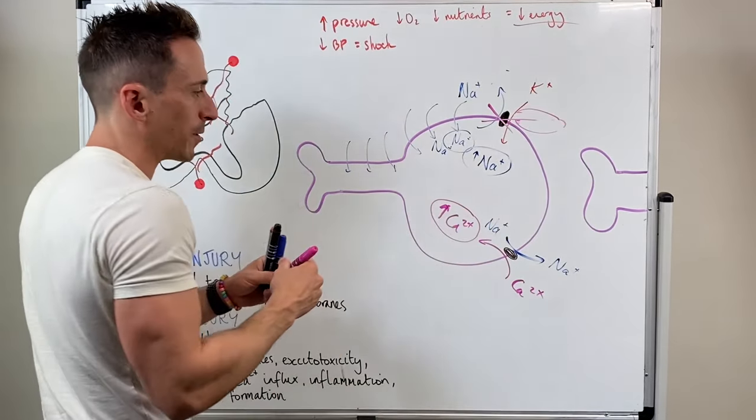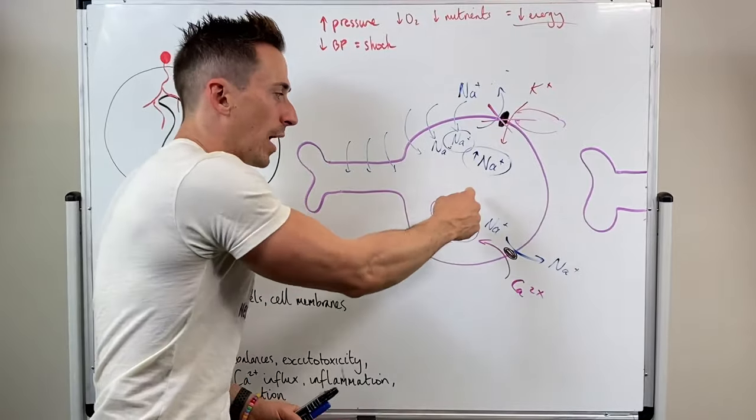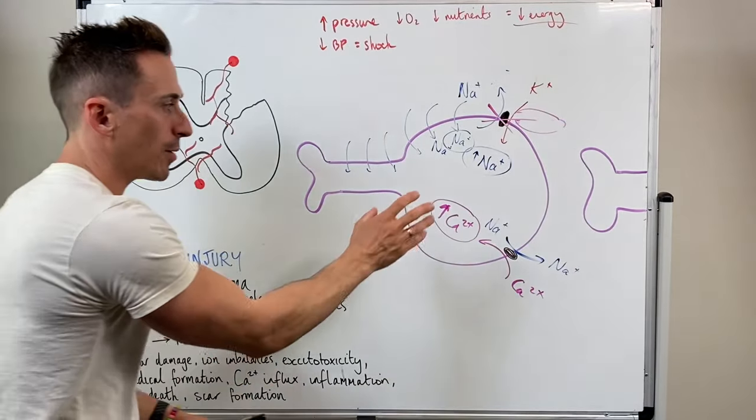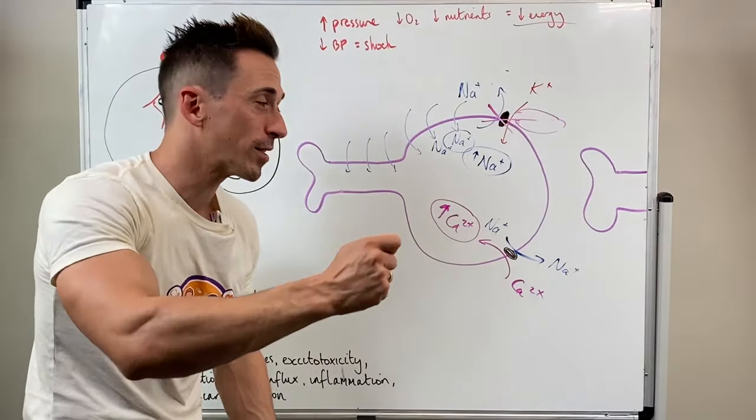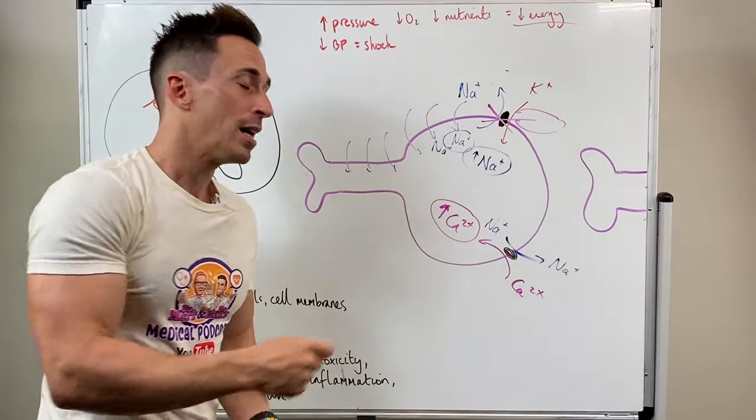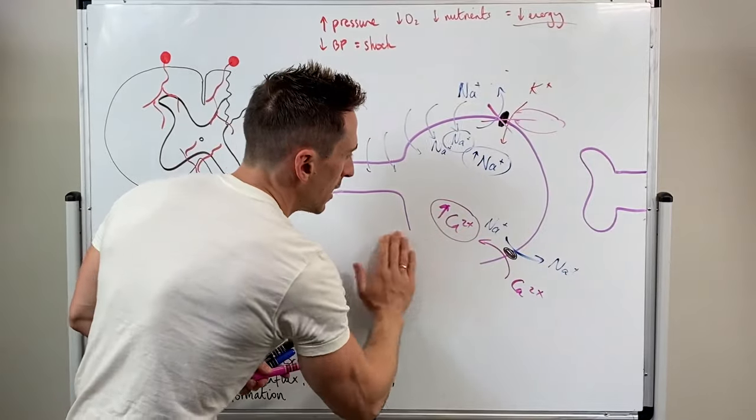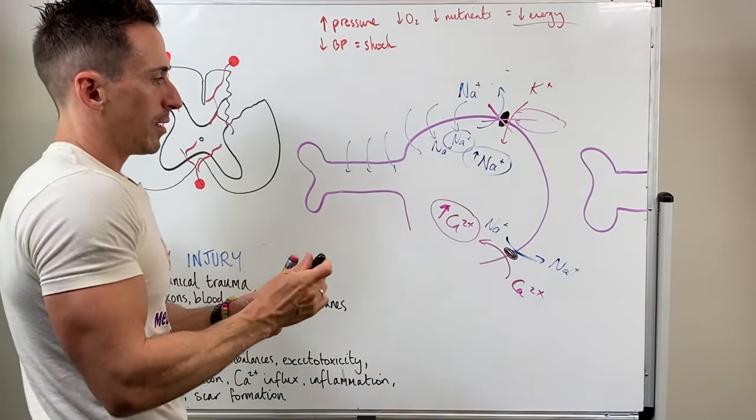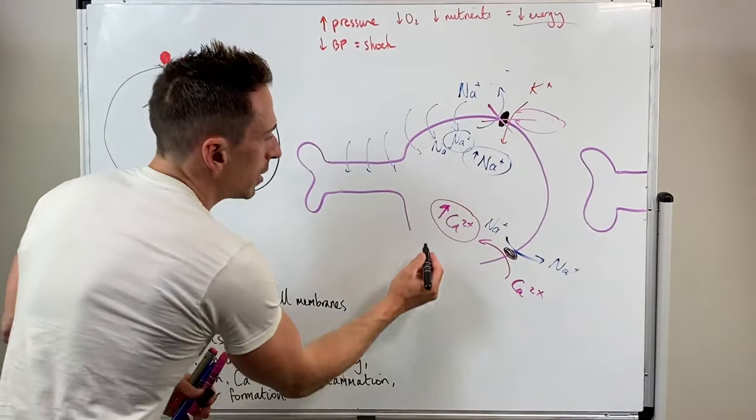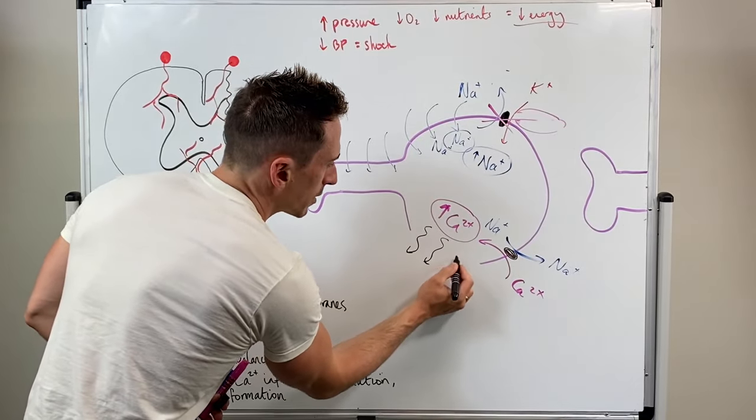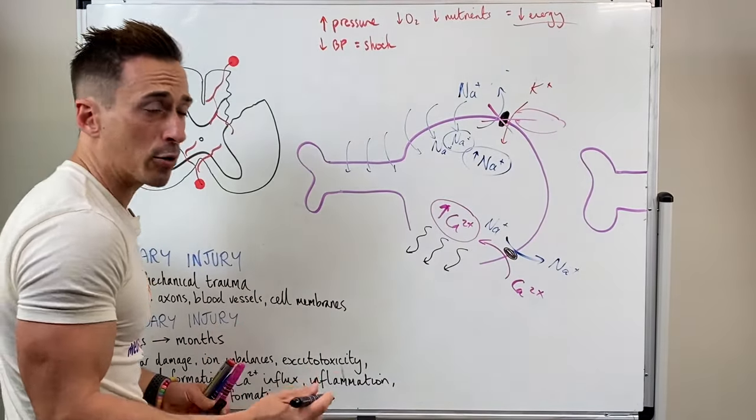Here's an important point: calcium influx, which you can see I've written here, calcium influx is a signal to tell cells to die. So what happens here is the cell begins to die because of all this calcium influx. If a cell dies, its membranes are disrupted and all of its components that are inside start to leak out. They're not supposed to be leaking out.